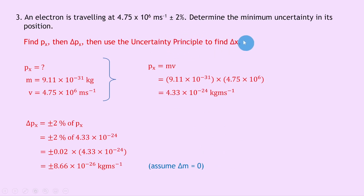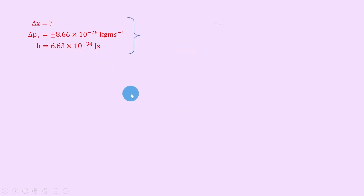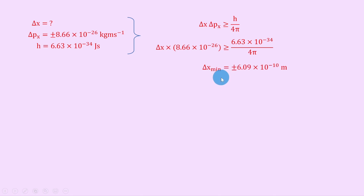Lastly, we use the uncertainty principle to find delta x. We know delta px is plus or minus 8.66 times 10 to the minus 26 kilogram meters per second, and Planck's constant h is 6.63 times 10 to the minus 34 joule seconds. Writing the equation delta x times delta px is greater than or equal to h over 4 pi, substituting in gives delta x times 8.66 times 10 to the minus 26 is greater than or equal to 6.63 times 10 to the minus 34 divided by 4 pi. Dividing both sides by 8.66 times 10 to the minus 26 and taking the equals part, delta x min equals plus or minus 6.09 times 10 to the minus 10 meters.